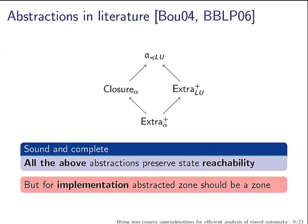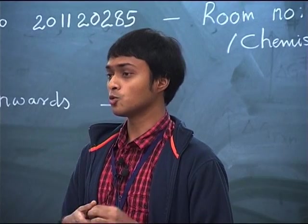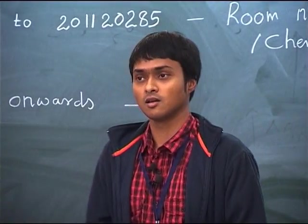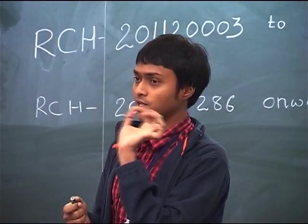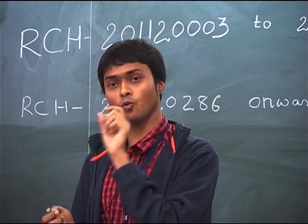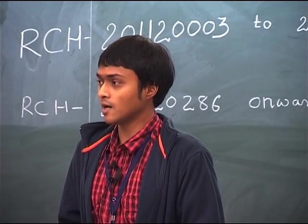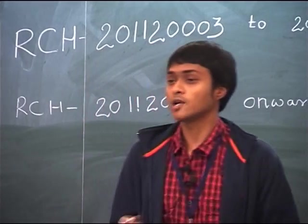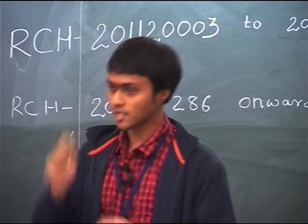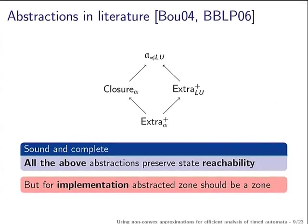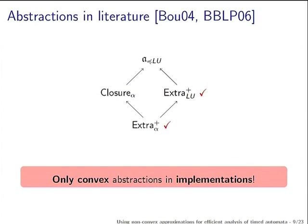All these abstractions are known to be sound and complete. There is one additional constraint: you want your abstraction to yield a set that is easy to handle — specifically, a zone — because we know how to handle zones efficiently. Only two abstractions have been used for implementations; they are called convex abstractions because a zone is a convex set, and an abstraction yielding a zone again is called a convex abstraction.